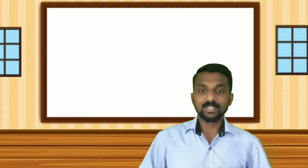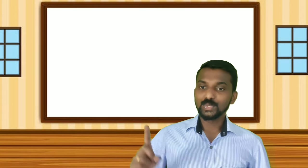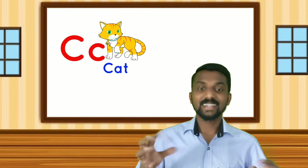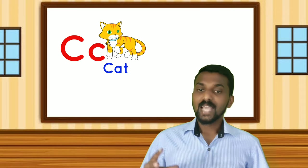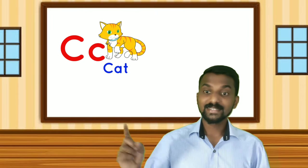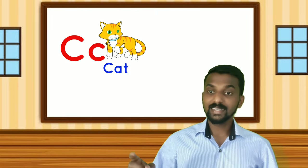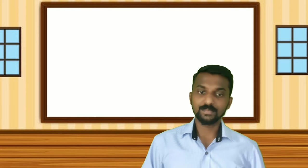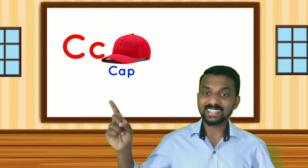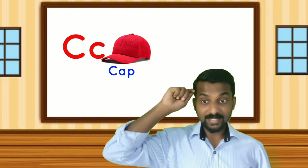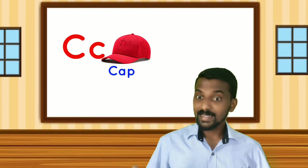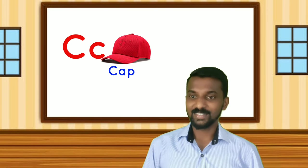Today we can study some other words. Do you know this picture? It is a cat. It is a cat. How can we spell the word? C-A-T Cat. C-A-T Cat. Yes, very good, very good. Then what is this? Yes, it is a cap. It is a cap. Cap. C-A-P Cap. Okay, very good, very good.